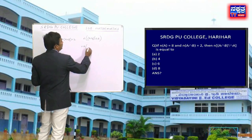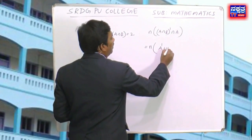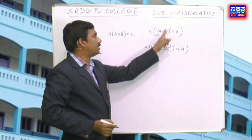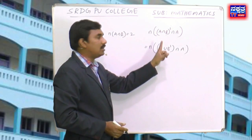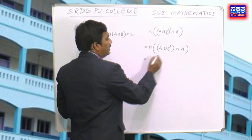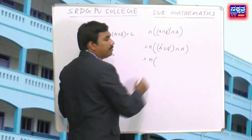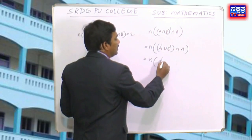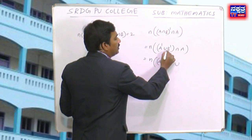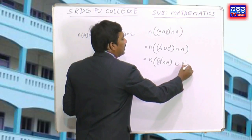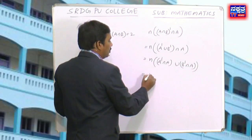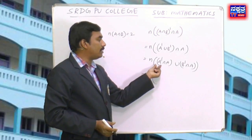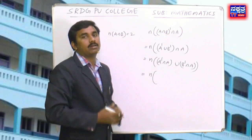To find n((A∩B)' ∩ A), you know De Morgan's Laws: (A∩B)' = A' ∪ B'. Now applying the distributive law: (A' ∪ B') ∩ A = (A' ∩ A) ∪ (B' ∩ A). Since A' and A are disjoint sets, A' ∩ A equals the empty set.